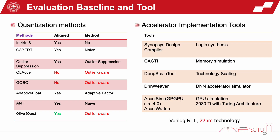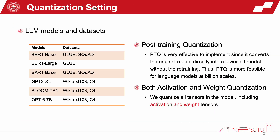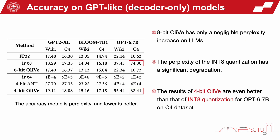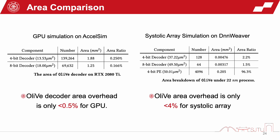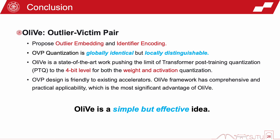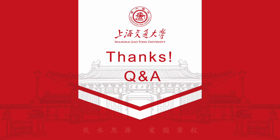I will show the results briefly. This is our evaluation baseline and quantization settings. We find that OVP pushes the limit of 4-bit quantization to a new state-of-the-art on BERT-like models. This is the accuracy on GPT-like models. Surprisingly, OVP only incurs little hardware overhead for GPU and systolic array. Finally, OVP achieves 4.5x speed-up and 4x energy reduction over the state-of-the-art outlier-aware architecture. We conclude that OVP is a simple but effective idea, and OVP is open source. Thanks everyone!